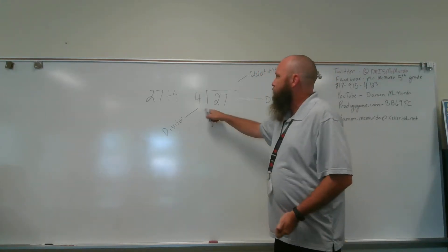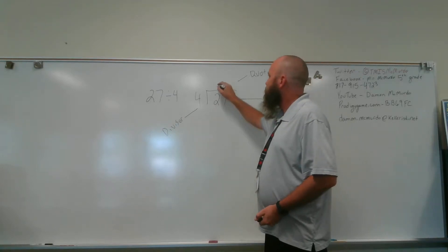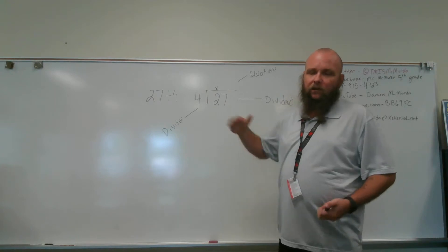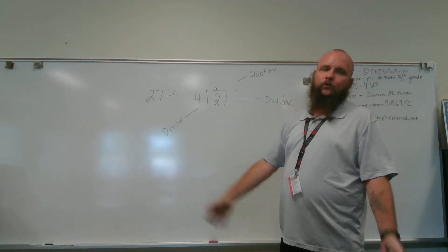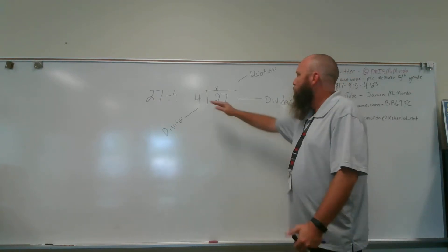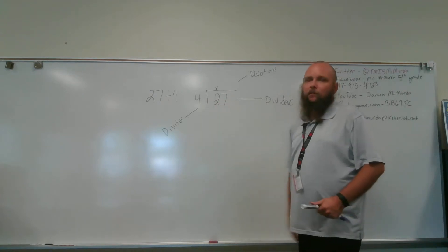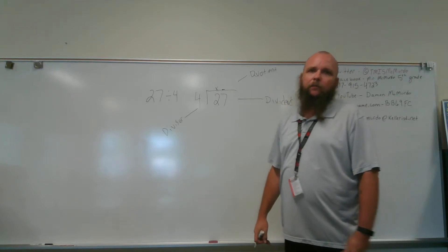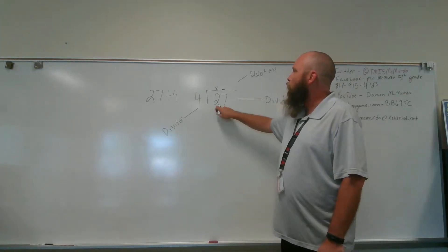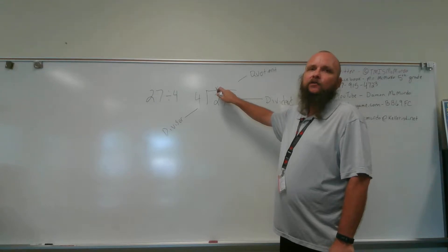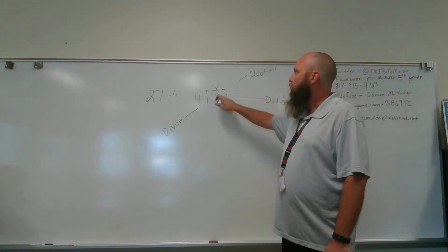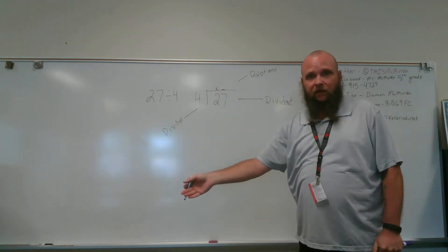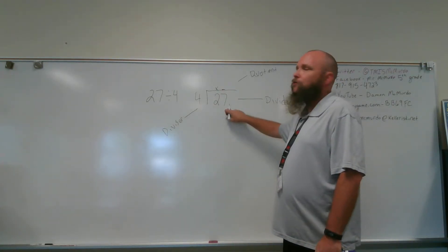So if I look at this, I know the 4 doesn't go into 2. I can't take 2 and split it into groups of 4, not evenly, not with using only whole numbers. Okay? So then I'm not going to have anything above the 2. Placement of where you're going to put the numbers in your quotient is very important. Since the 4 won't go into 2, I do not, and I mean do not, want to put a number over the 2. If I do, that's telling me that 4 goes into that 2, and it doesn't.